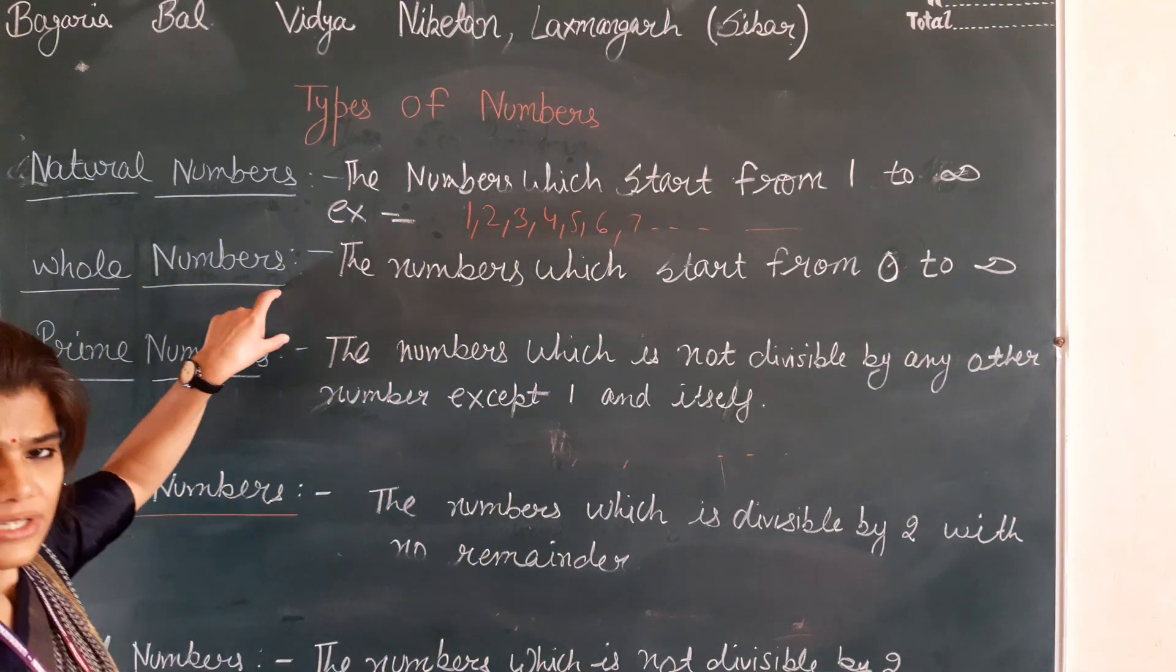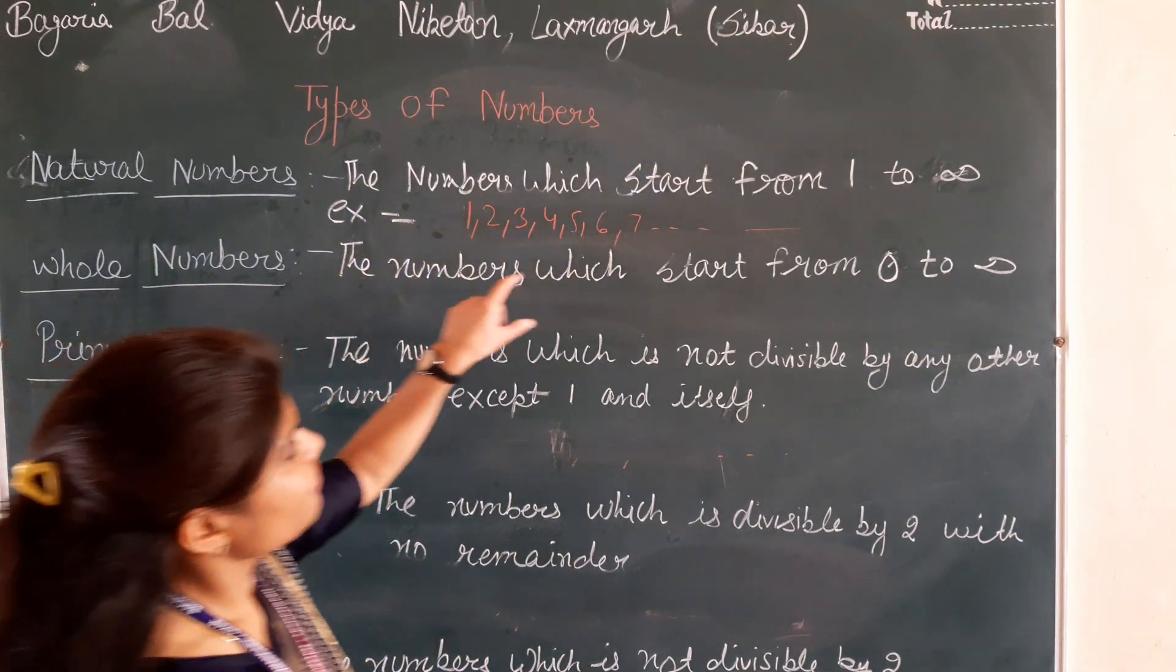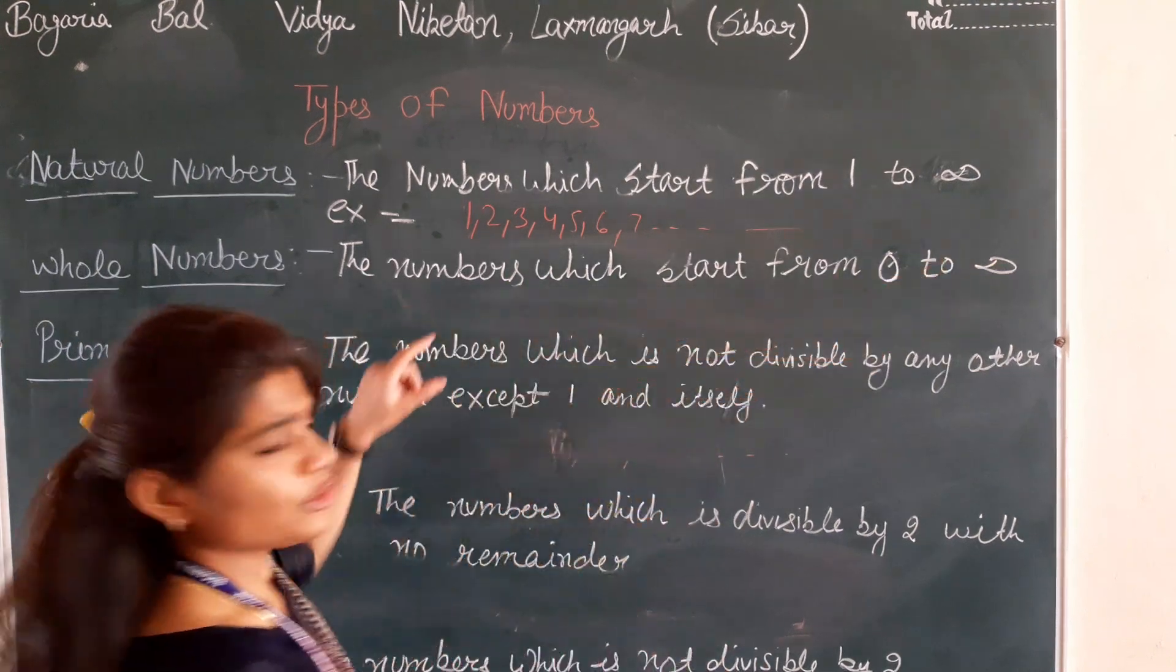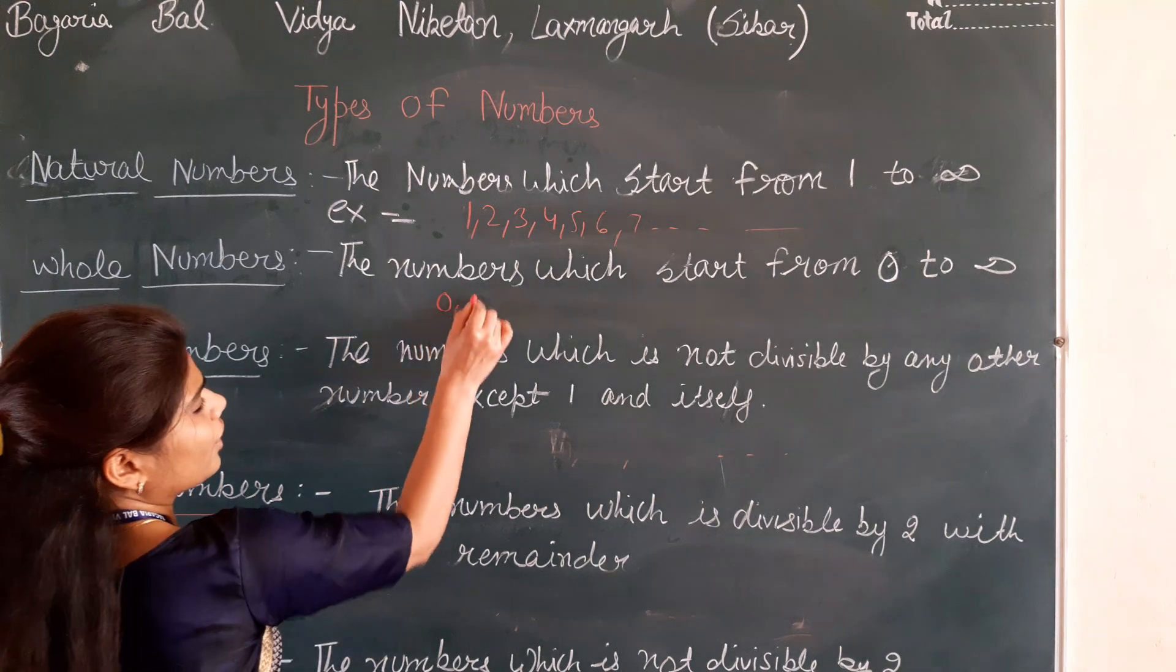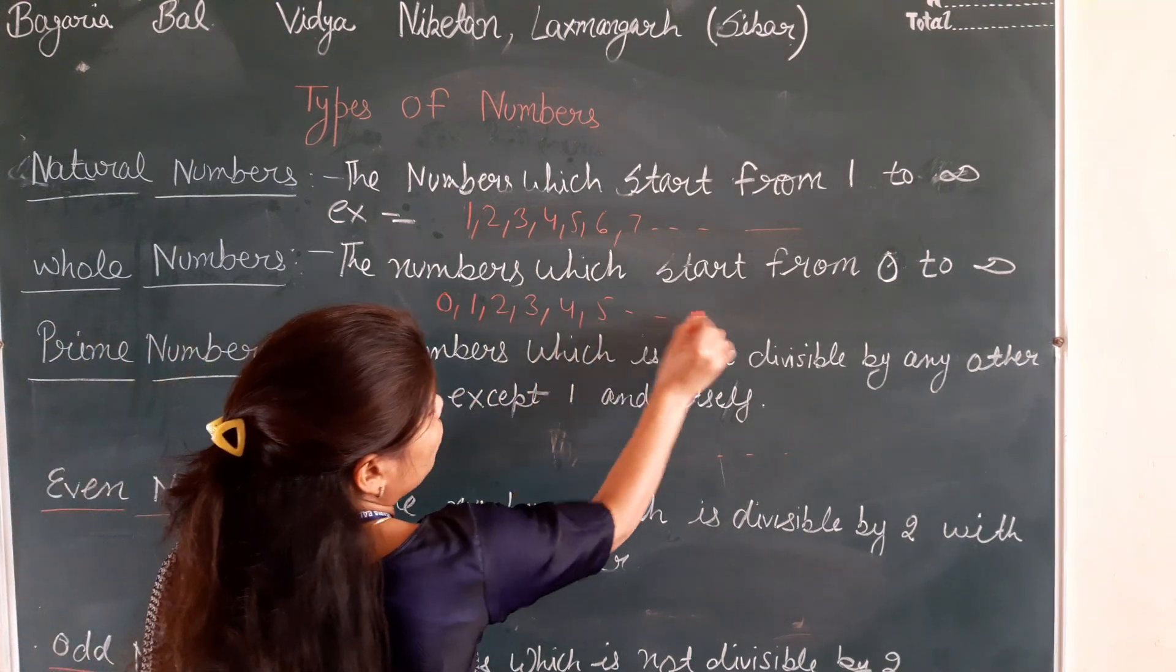Next, whole numbers. What are the numbers? The numbers start from 0 to infinity. The numbers are whole numbers from 0 to start. So, 0, 1, 2, 3, 4, 5.